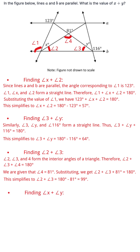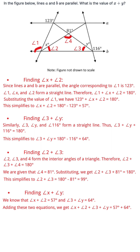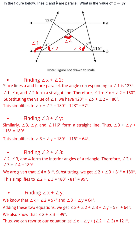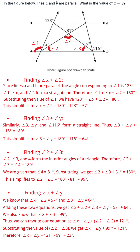Step 4: Finding angle x plus angle y. We know that angle x plus angle 2 equals 57 degrees, and angle 3 plus angle y equals 64 degrees. Adding these two equations, we get angle x plus angle 2 plus angle 3 plus angle y equals 121 degrees. Substituting the value of angle 2 plus angle 3, which equals 99 degrees, we get angle x plus angle y plus 99 degrees equals 121 degrees. Therefore, angle x plus angle y equals 121 minus 99 equals 22 degrees.